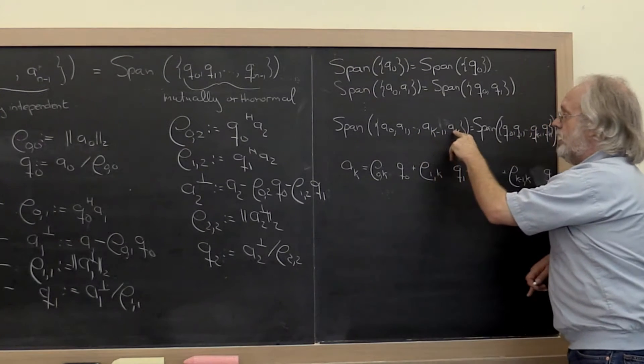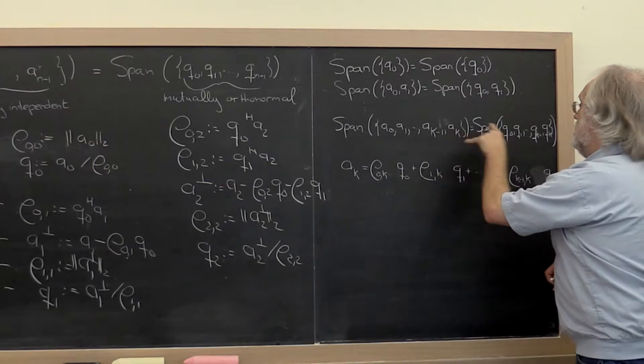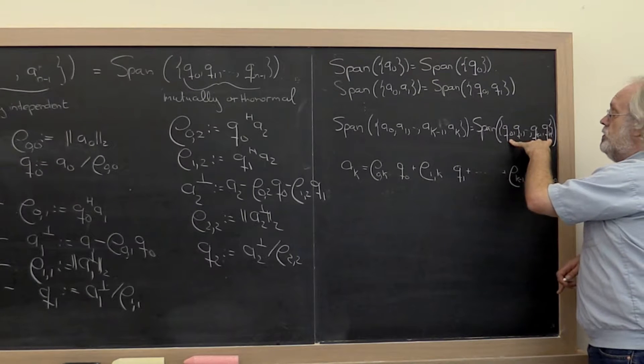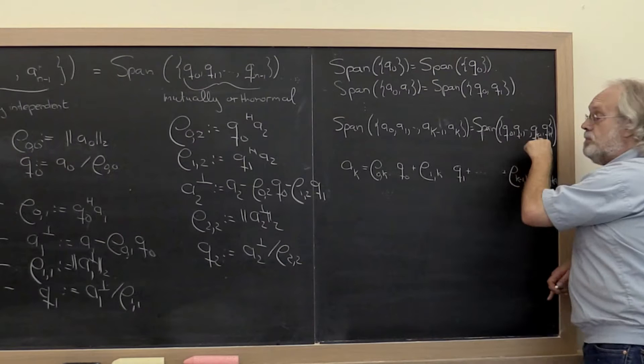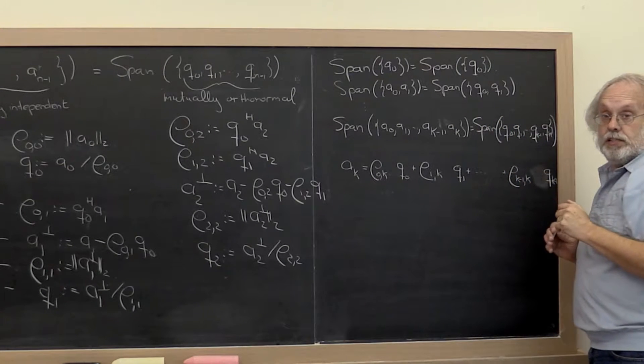So you know that Ak must be a linear combination of Q0 through Qk because it lies in the span of those vectors.